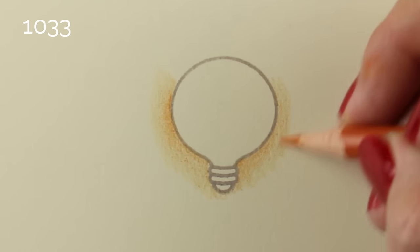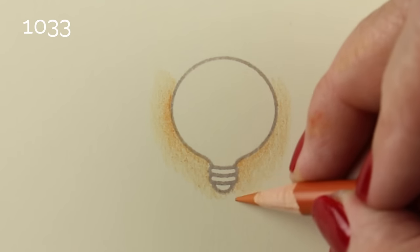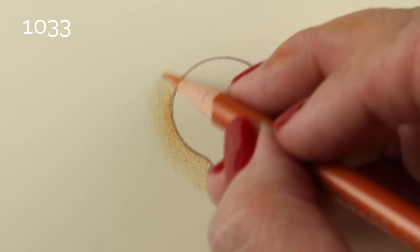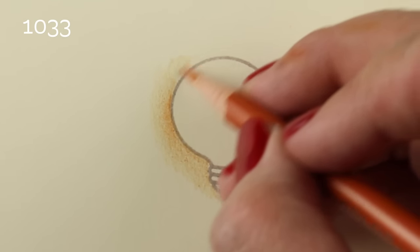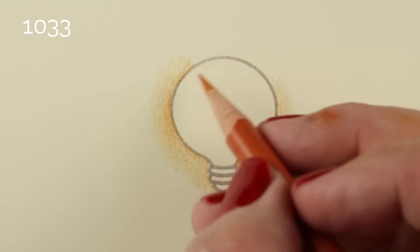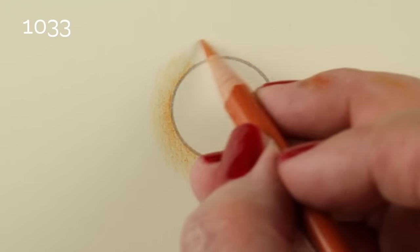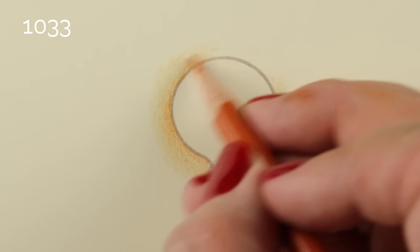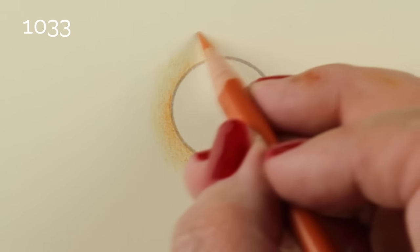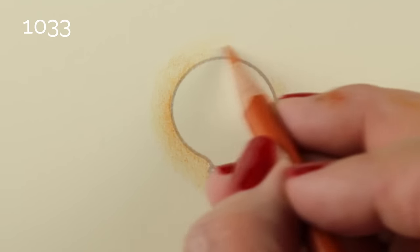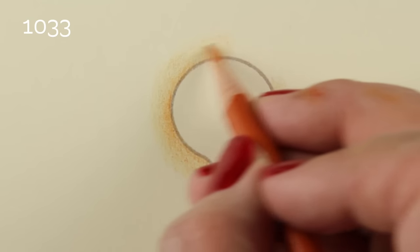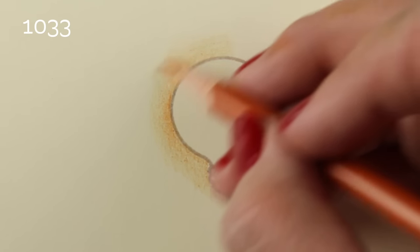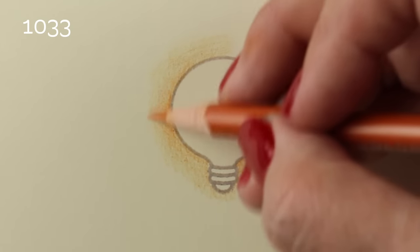You can see, since we're zoomed in so close, the texture of the Neenah cardstock that's brought out by the pencil. When I use my really sharp pencil, I can get into some of those little areas of texture and smooth them out by just filling in that little spot. When you go back and forth like this, you create little lines, and sometimes you can get rid of those little lines if you're really careful by filling in some of the spots in between.